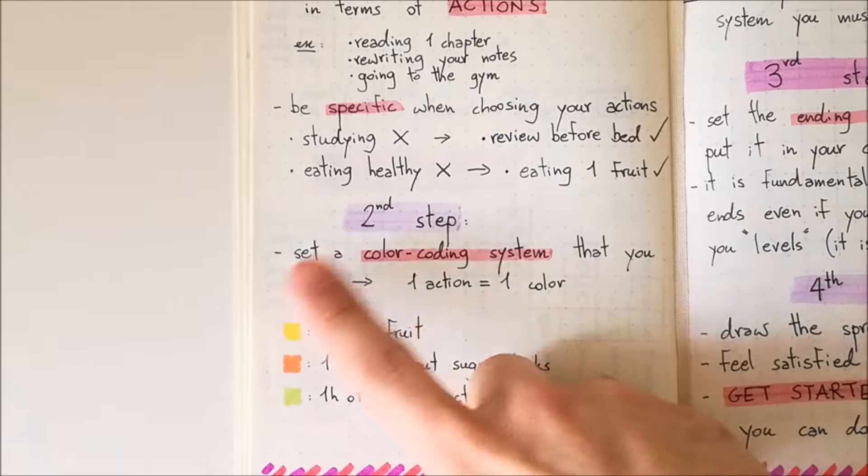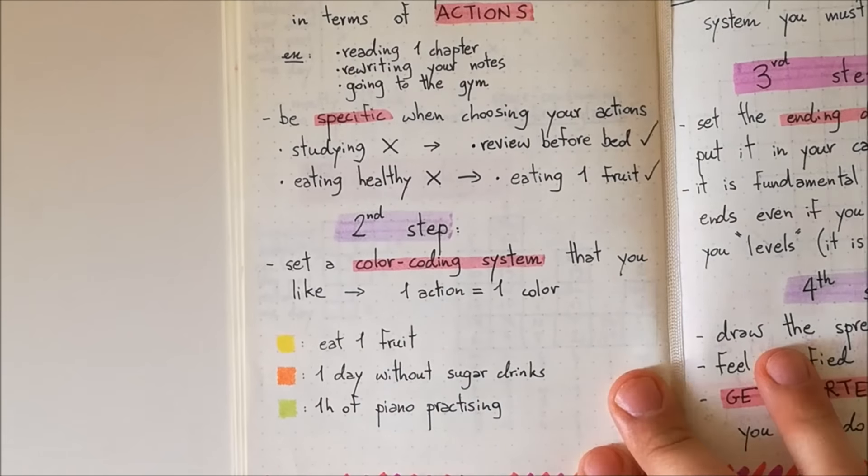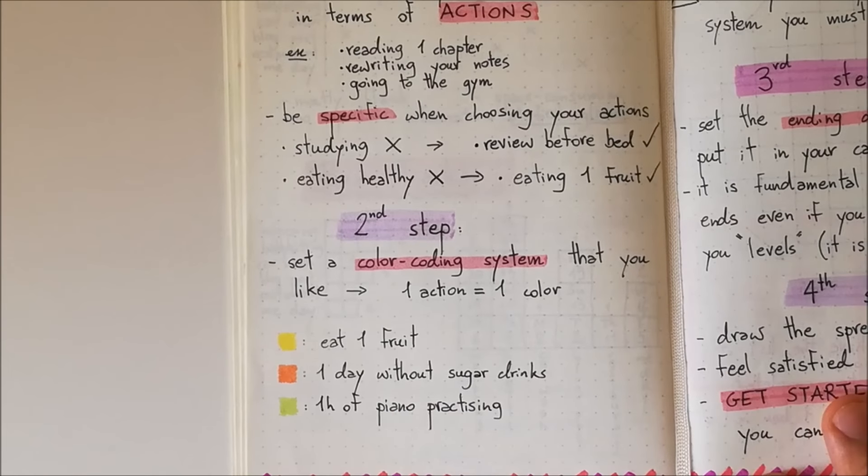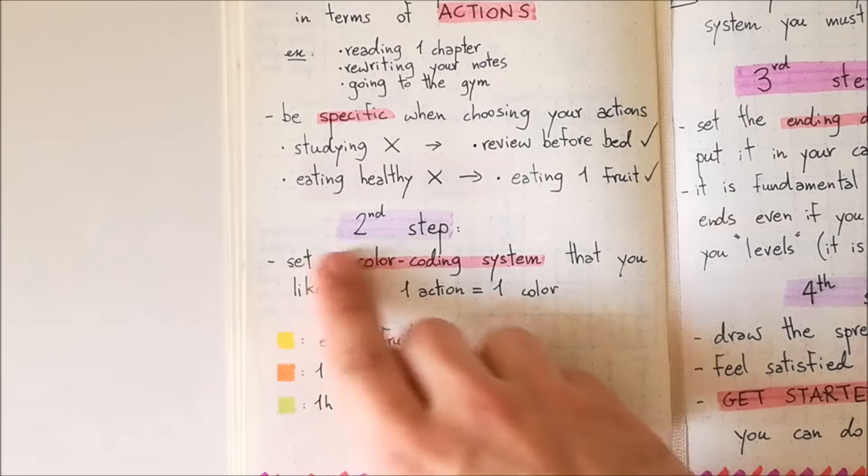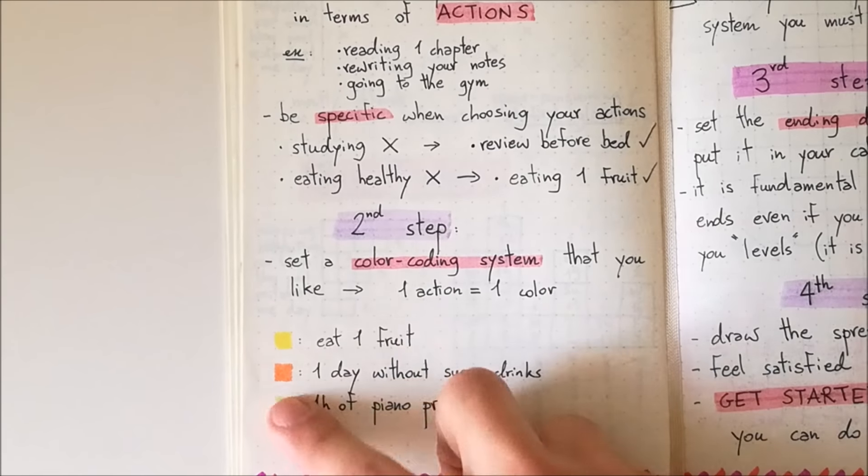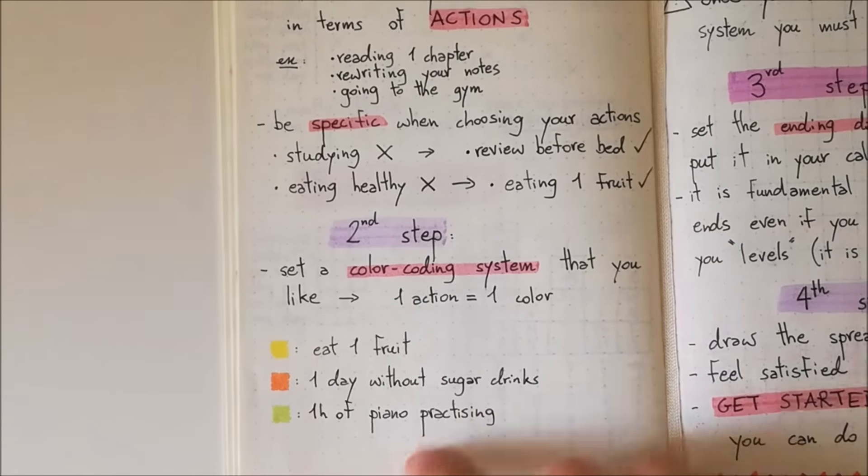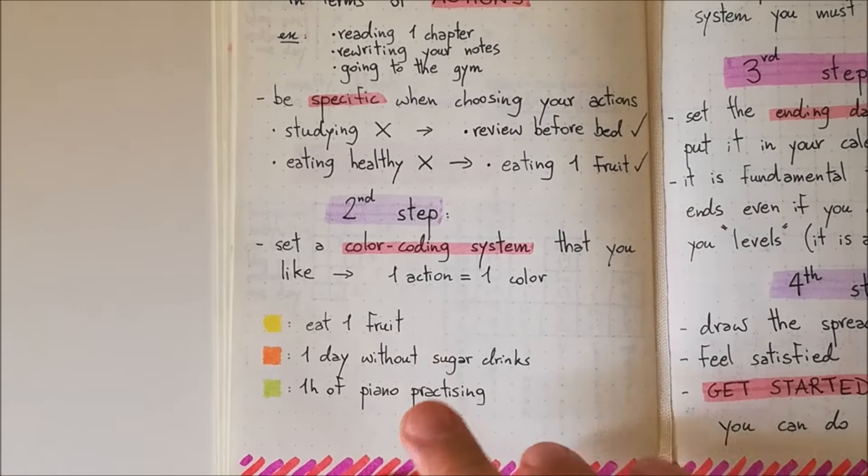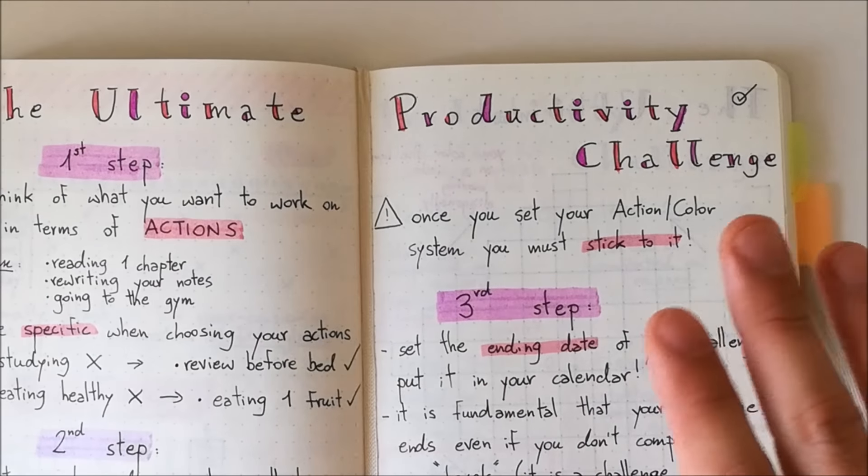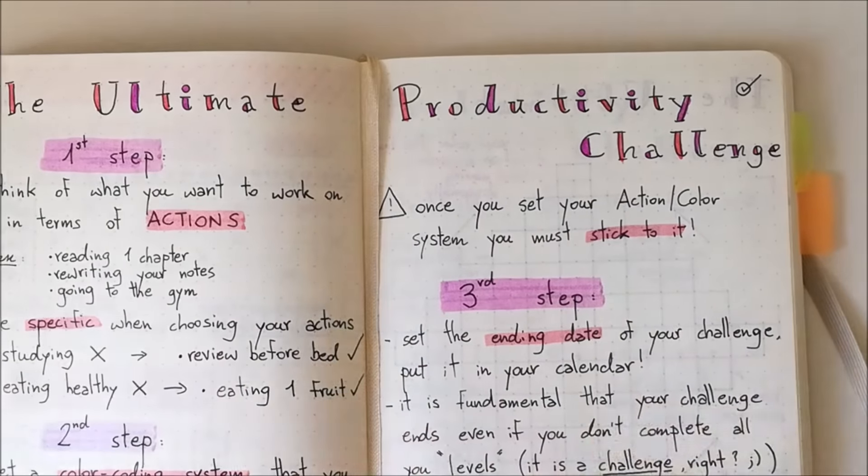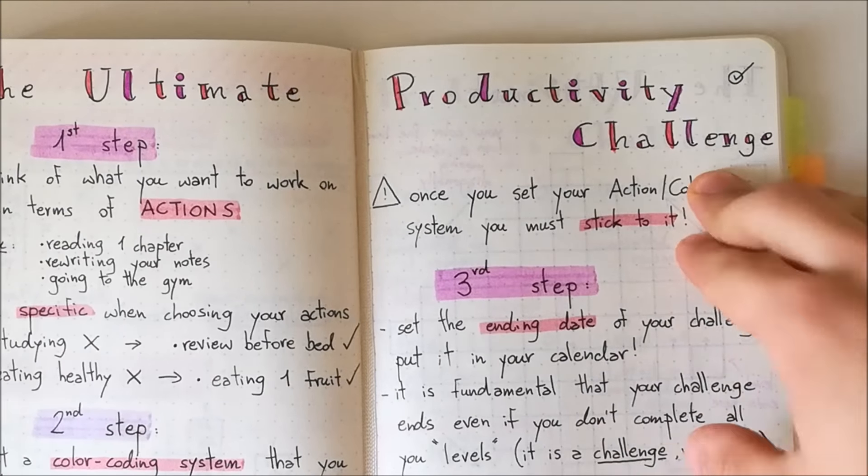Alright. Step two is to set a color coding system. Okay guys, you know by now that I love coloring. I am obsessed with stationery and to me, coloring is so satisfying, so motivating. So within my productivity challenge, I have decided to associate one color to all of the actions that I've chosen. So here, for example, you may go for yellow if you eat one fruit or orange if you spend one whole day without sugar drinks or green for one hour of piano practicing. Actually, for those of you who don't know, I play the piano. I just don't have one here in Paris, but I used to play the piano back in Italy. Also, it is very important that once you set your action color system, you must stick to it. So this is a challenge. So you are supposed to set the challenge up on the first day and then you should stick to that till the very end of the challenge.